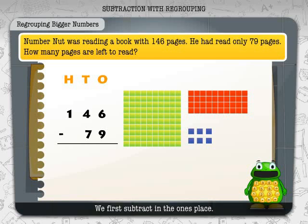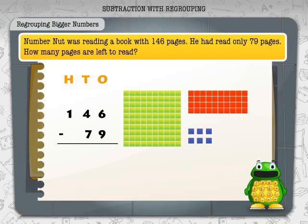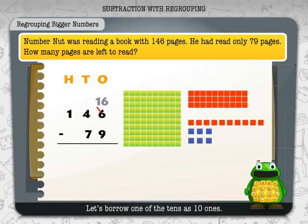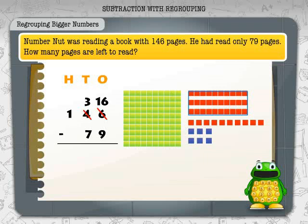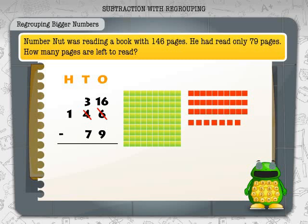We first subtract in the ones place. From six ones we need to take away nine ones, but we have only six. Let's borrow one from the tens as ten ones. We now have sixteen ones and three tens. Subtracting nine ones from sixteen ones leaves seven ones. So we write seven in the ones place.